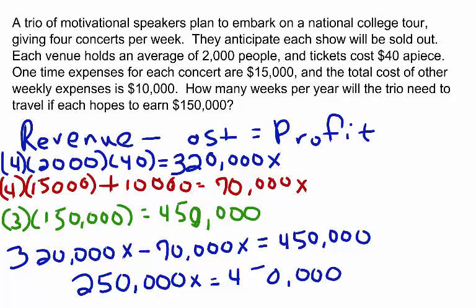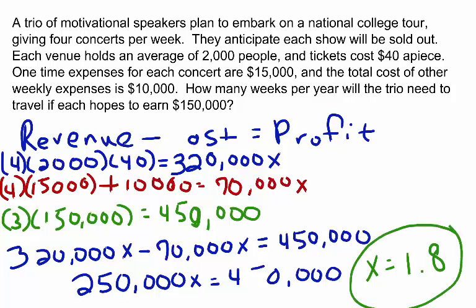To solve for X, we combine like terms: $320,000X minus $70,000X gives us $250,000X. Dividing both sides by $250,000 gives a result of X equals 1.8. In other words, the trio will need to travel for 1.8 weeks if they wish to each earn $150,000. Obviously, in the real world, it would make sense to round that up to two, so most likely they'd be scheduling two weeks' worth of speaking engagements.